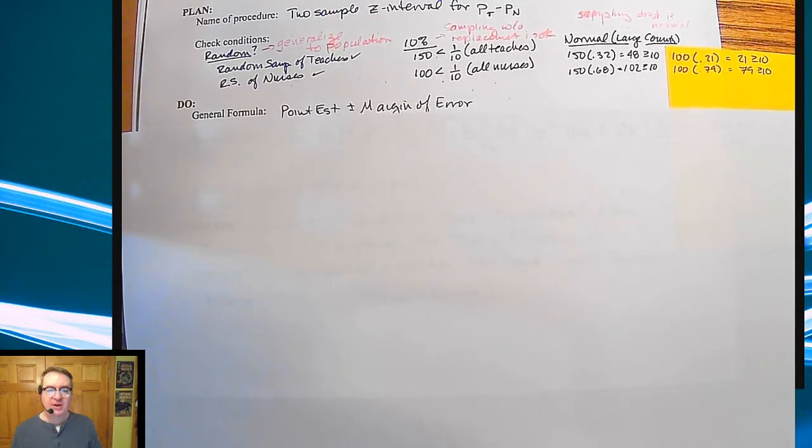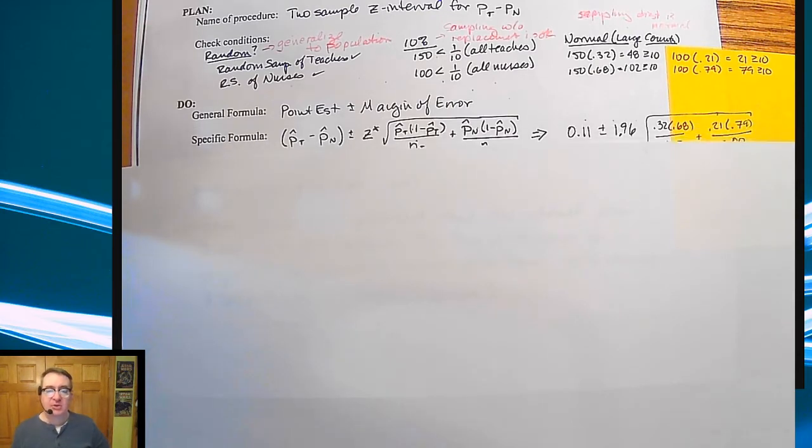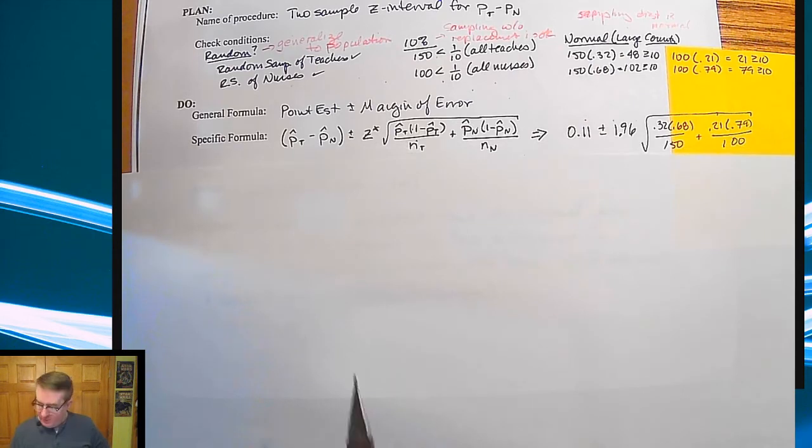So we've got our point estimate minus the error. So again, write out the general formula, because again, that's going to help get the idea of what confidence interval is into your head and demonstrate that you know what you're doing. The specific formula is this. So we're going to write this out.